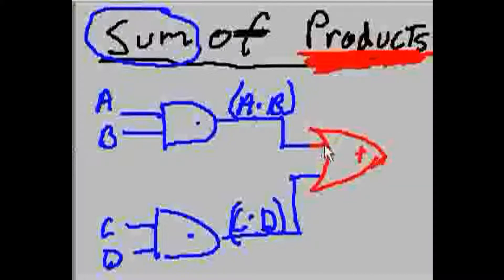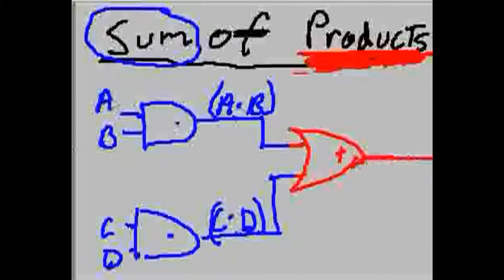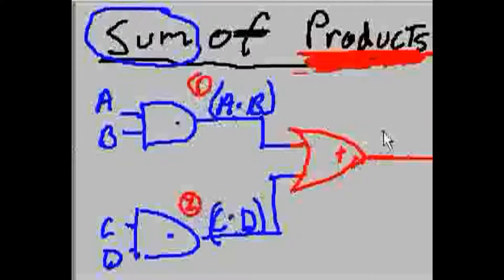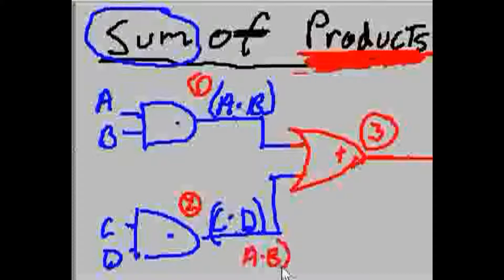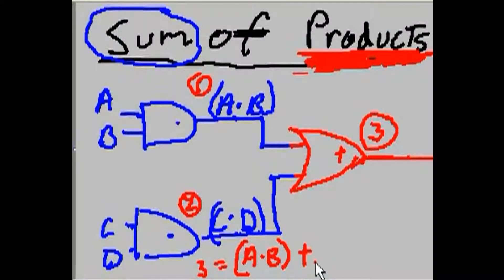I'll put a plus sign here. Now, what do we have? We have a product here. We have a product here. And we're ORing them together. Wow. And the big question is, can I fit this onto this screen? Whoa. That's a big question. Now, I'm going to take the A and B and OR it with C and D. This is 1. This is 2. And this is 3. I'm not going to have enough room. So, let's write 3 down here.